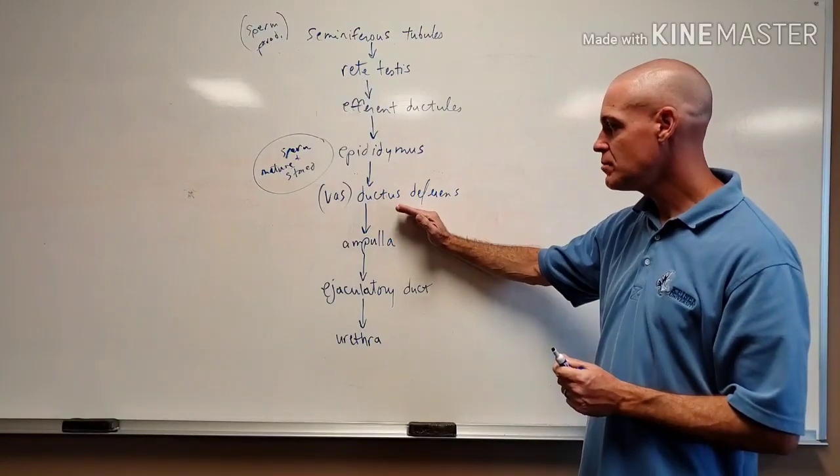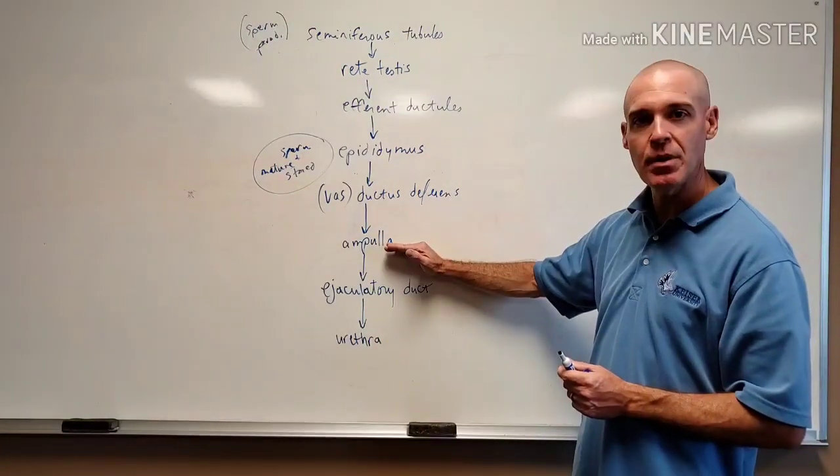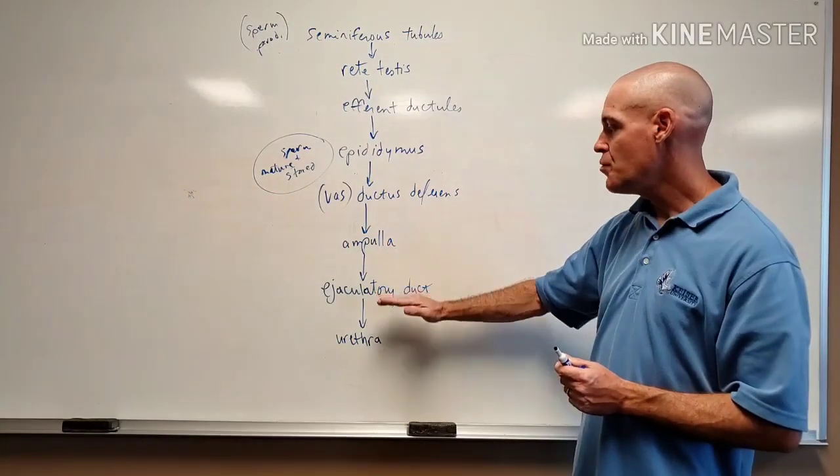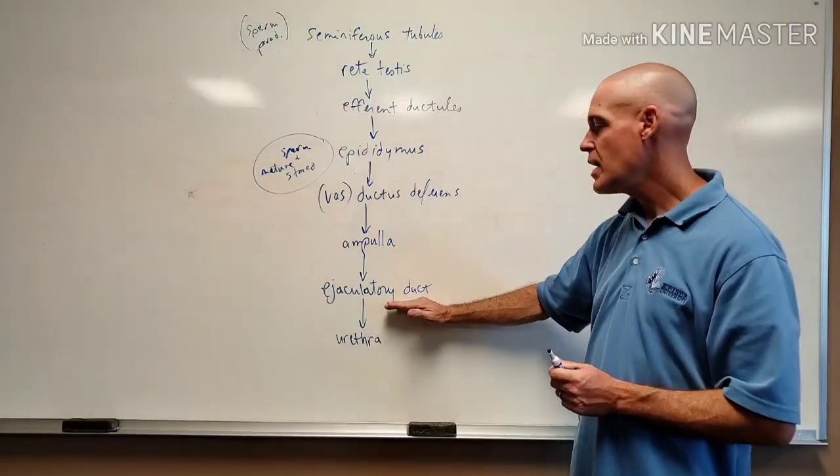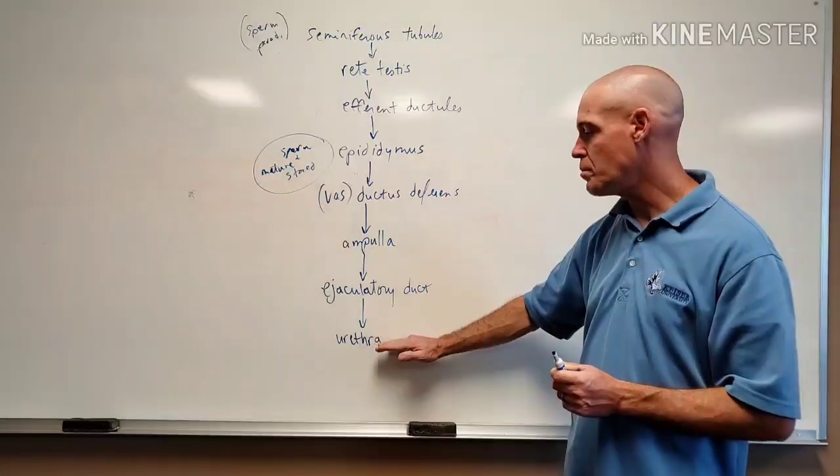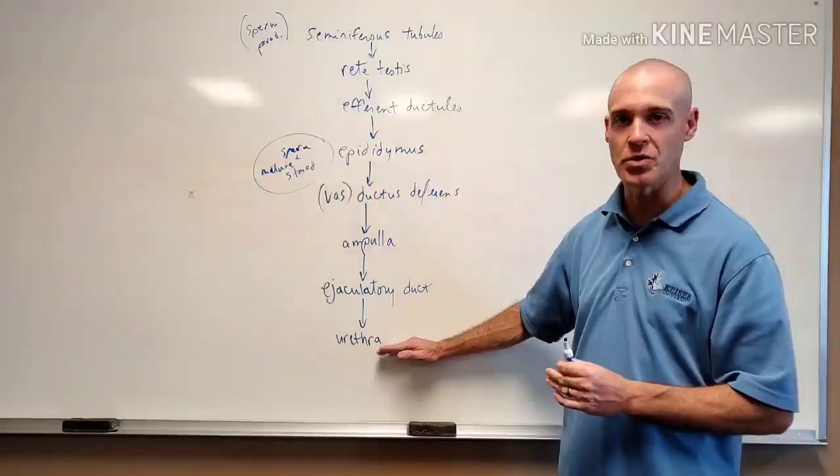After the vas deferens, sperm travels through the ampulla. Then through the ejaculatory duct, and then lastly, the last point would be the urethra of the male, which is in the penis.